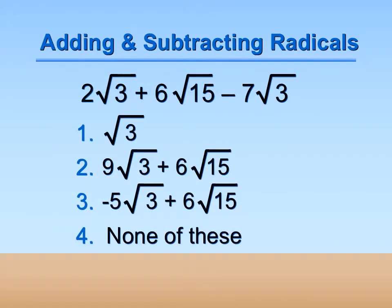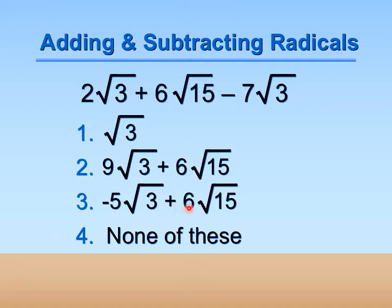So let's try a problem: 2 square roots of 3 plus 6 square roots of 15 minus 7 square roots of 3. The only like terms are 2 square roots of 3 minus 7 square roots of 3. So 2 minus 7 is negative 5, giving us negative 5 square roots of 3. The 6 square roots of 15 can't be combined with anything, so it just goes on the end: plus 6 square roots of 15, which means the answer is number 3.